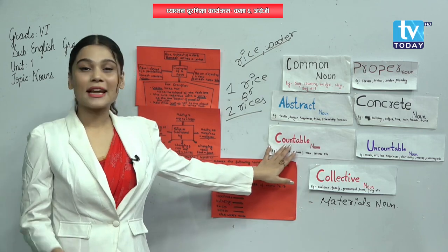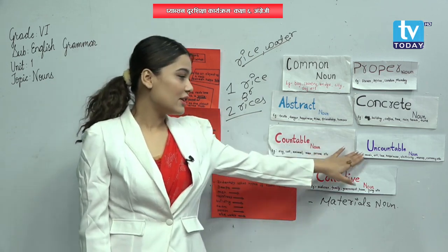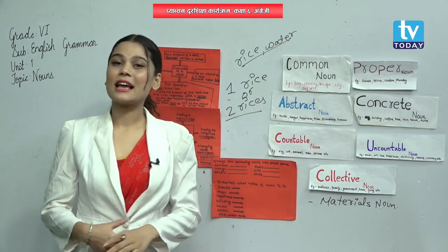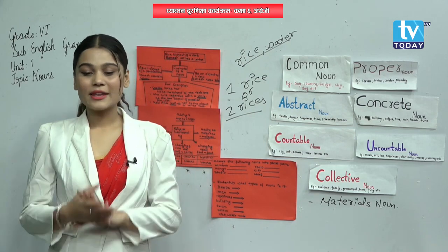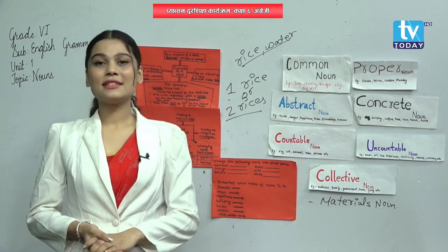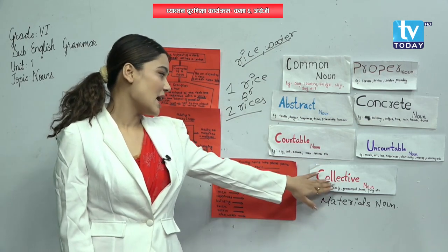Countable noun — we can count it. Uncountable noun — we cannot count it. Now another one is collective noun.